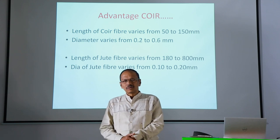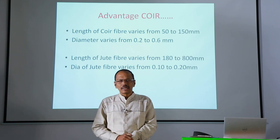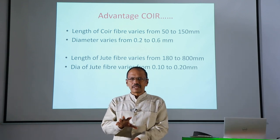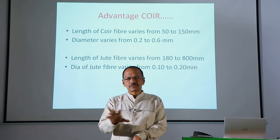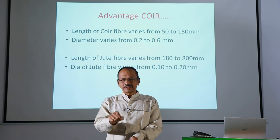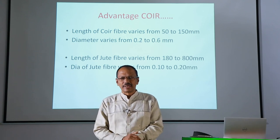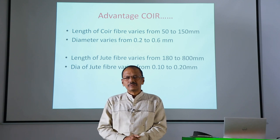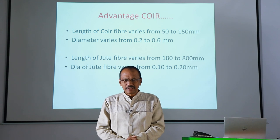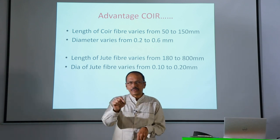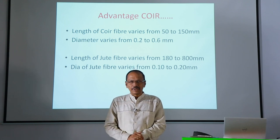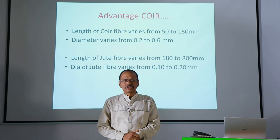Coir and jute both are lignocellulosic fibers, meaning coir has lignin and cellulose, and jute is also having lignin and cellulose. While coir has around 45 percent lignin in it, jute has only half of that — maybe 20 to 25 percent is present in jute. This particular organic matter, lignin, provides the fiber adequate strength to withstand.